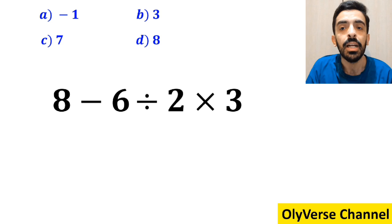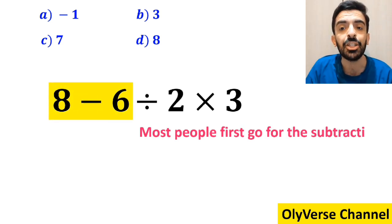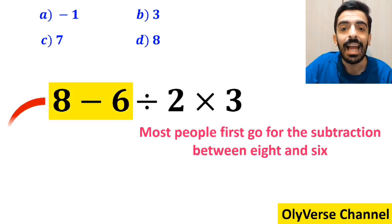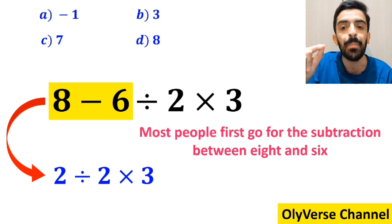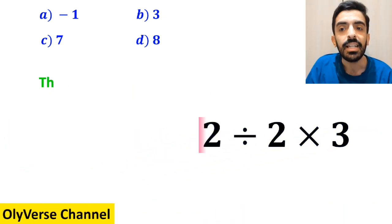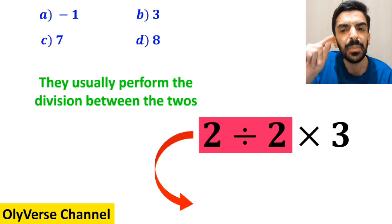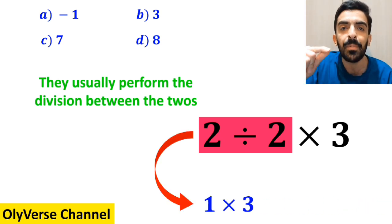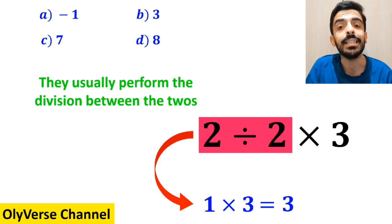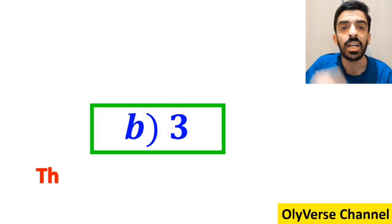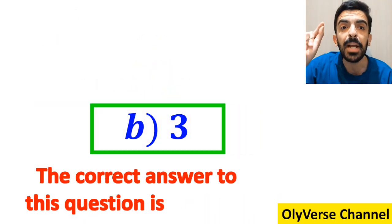To solve this question, most people first go for the subtraction between 8 and 6 and write this expression as 2 divided by 2 then times 3. In the next step, they usually perform the division between the twos and simplify this expression to 1 multiplied by 3, which finally gives them the answer 3. And immediately, they say that the correct answer to this question is option B.